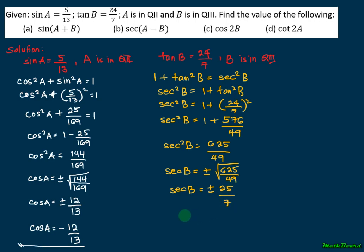Since secant and cosine are reciprocals, we can get the value of cosine B as negative 7 over 25. We use the negative value because in the third quadrant, cosine is negative as well as sine.